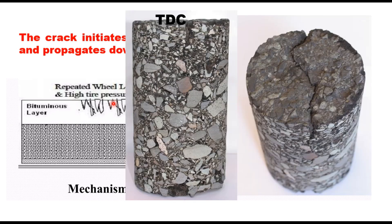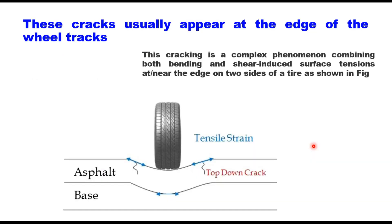The crack appears at the top and goes through the depth of the layer. You can see this bituminous core from a different angle — this is the crack at the surface and it goes down the layer. These cracks usually appear at the edge of the wheel track, and this cracking is a complex phenomenon combining both bending and shear-induced surface tensions at or near the edge on two sides of a tire, as shown here.